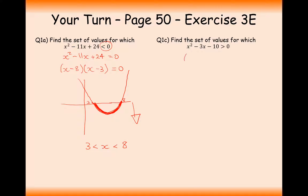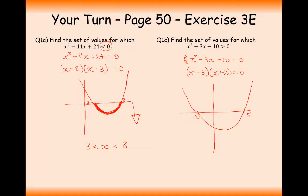For the second practice question, we set it equal to an equation and factorise to find intersection points at x equals 5 and x equals minus 2. On the positive quadratic graph — a smiley face shape — we want the region bigger than the zero marker, which gives two separate sections. The x values here are less than minus 2 or greater than 5, satisfying the inequality.